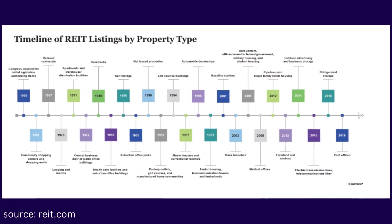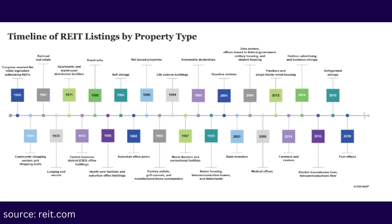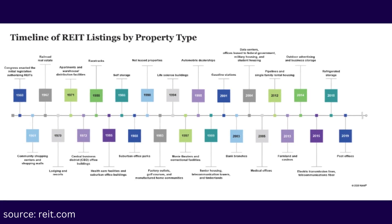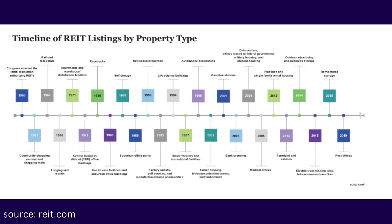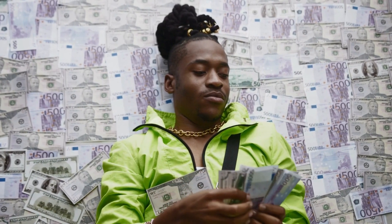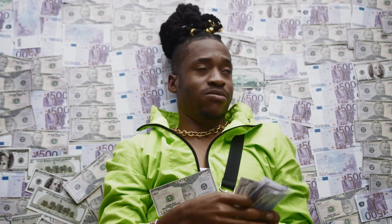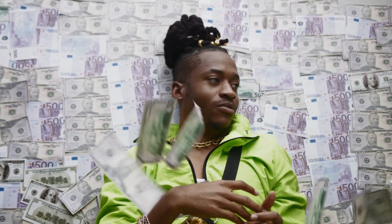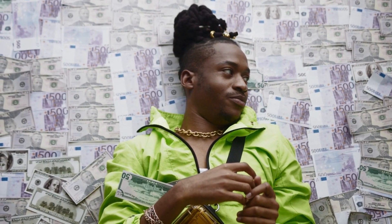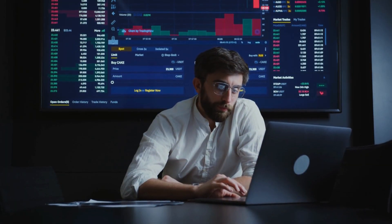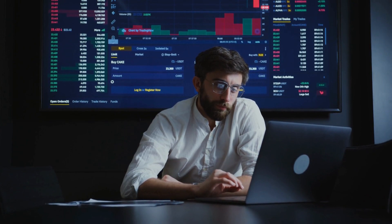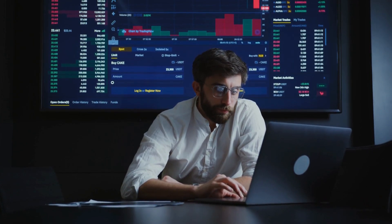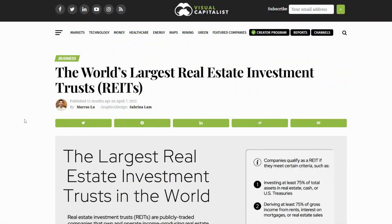The history of REITs can be traced back to the 1960s when they were introduced in the United States to make real estate investments more accessible to individual investors. Prior to the creation of REITs, investing in real estate was primarily the domain of wealthy individuals and institutions. REITs democratized real estate investing by allowing anyone to buy and sell shares in a REIT, just like they would with any other publicly traded stock.